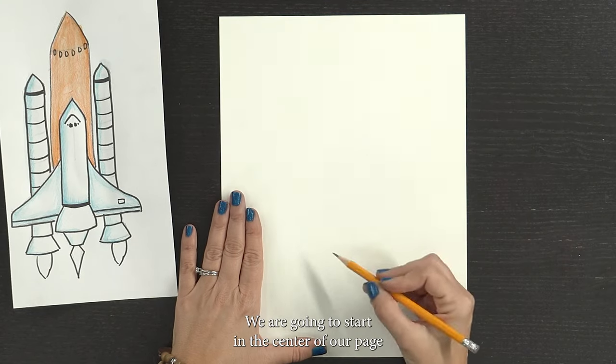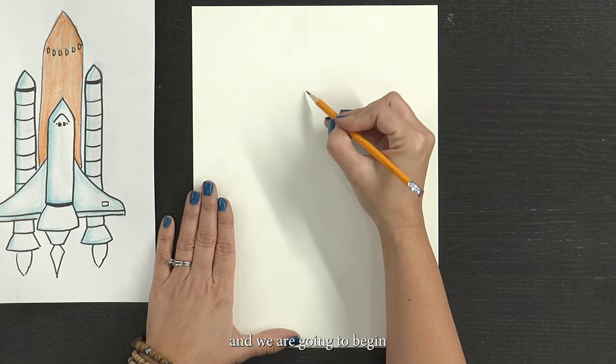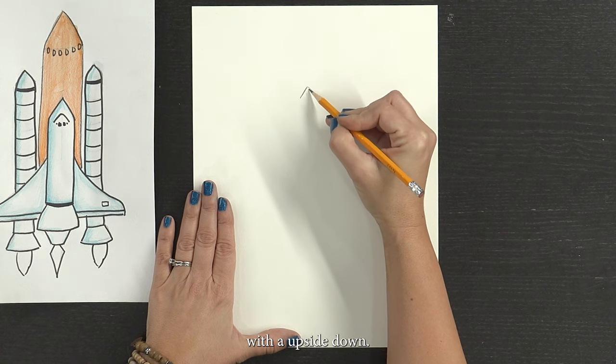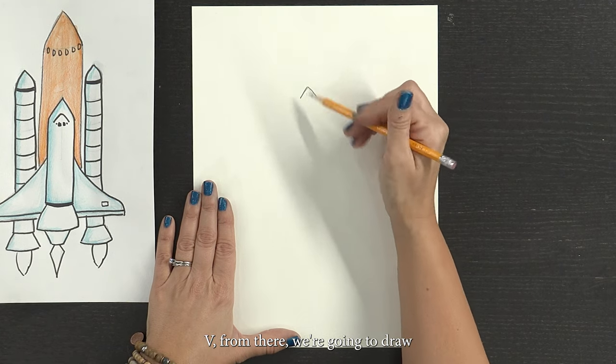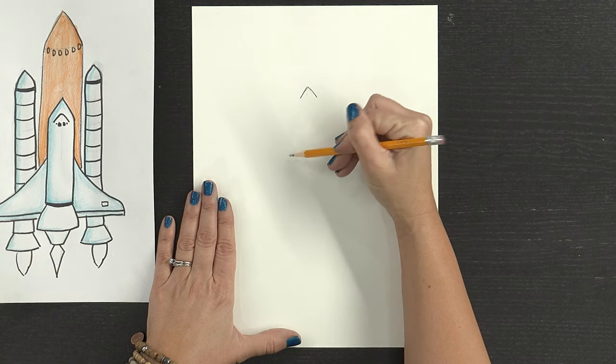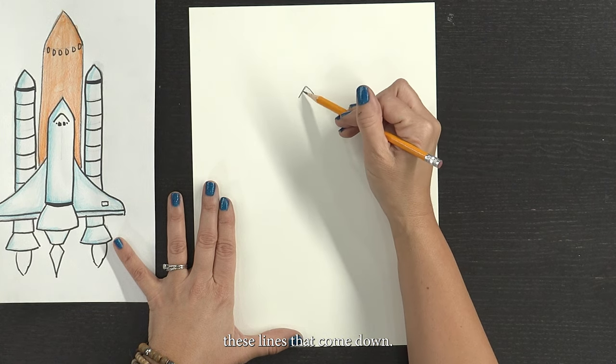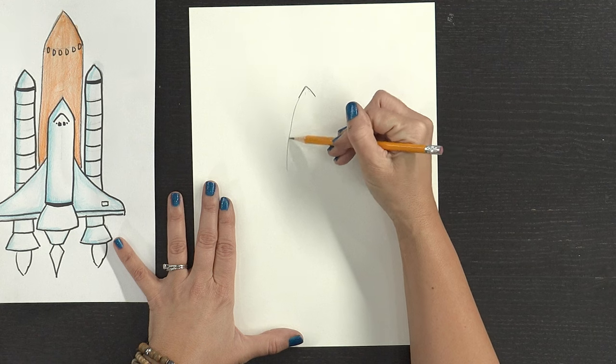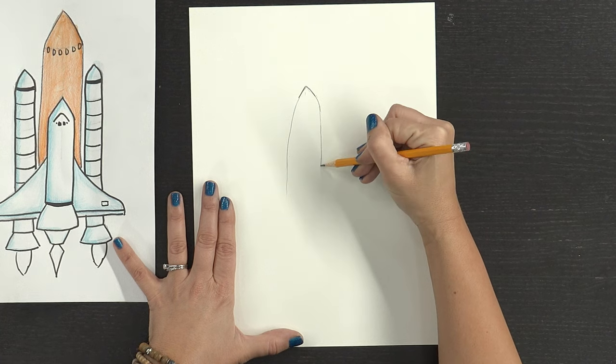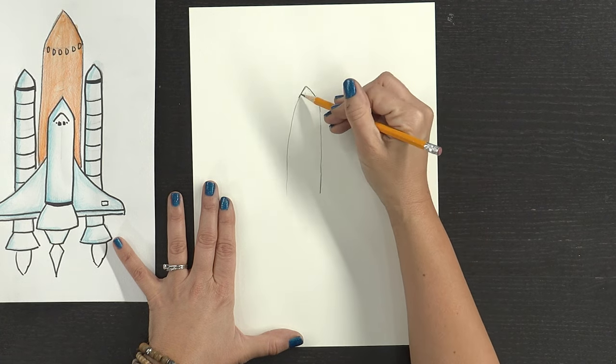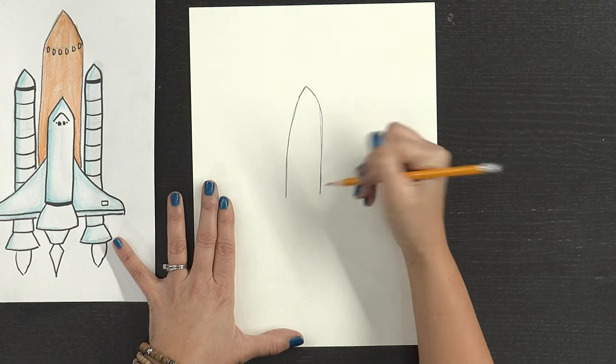To begin, we are going to start in the center of our page and we are going to begin with an upside-down V. From there, we're going to draw these lines that come down. Great job.